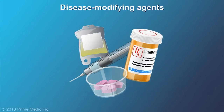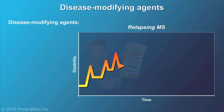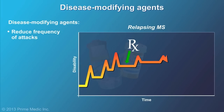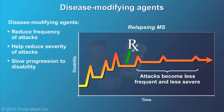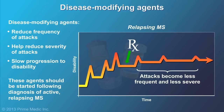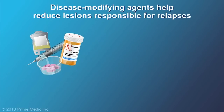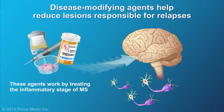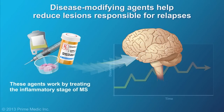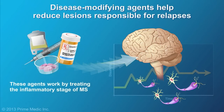Disease-modifying agents are drugs that you take on a regular basis to reduce the frequency of attacks. Some may also reduce their severity and slow progression to disability. Most doctors recommend starting on one of these medications as soon as possible following diagnosis of active, relapsing MS. They work by treating the inflammatory stage of MS, which helps reduce the formation of new lesions responsible for relapses.